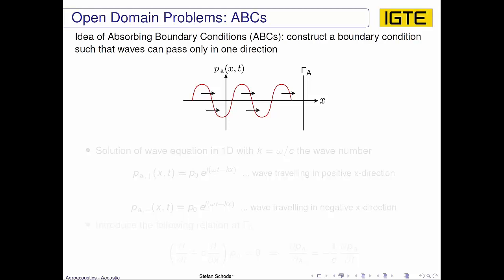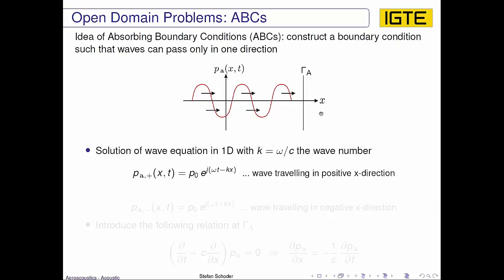The absorbing boundary conditions aim to construct a boundary condition such that waves can only pass in one direction. If waves approach this boundary condition, then waves traveling in their respective direction, like here in the positive x direction, will pass, and waves traveling in the other direction will be reflected.